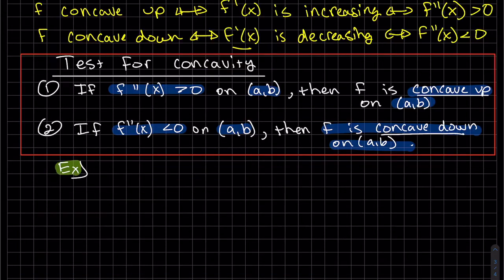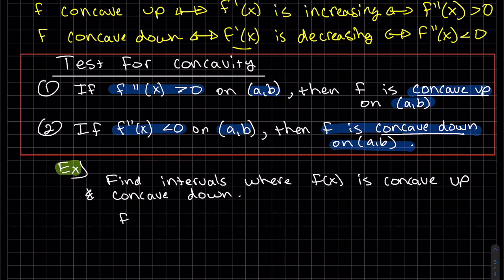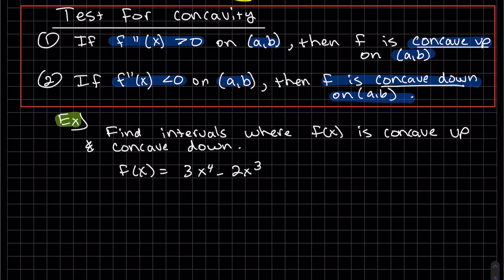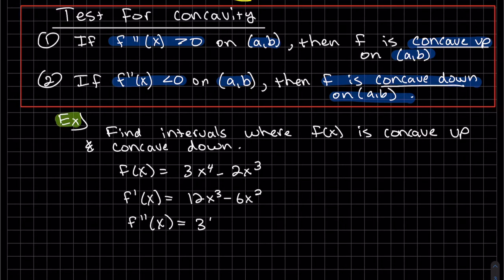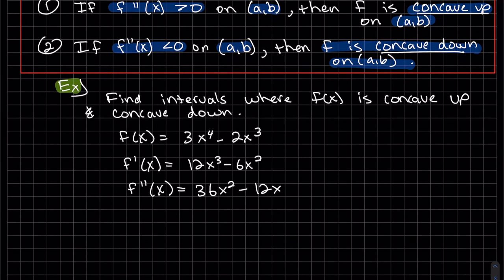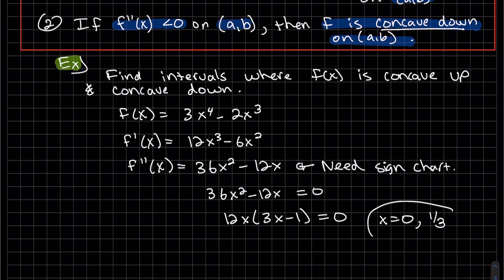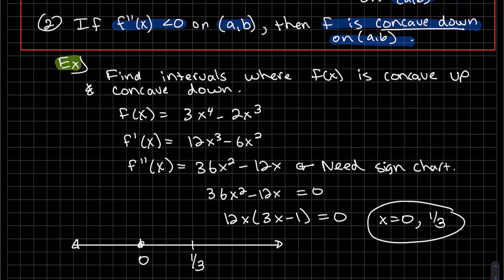Let's do an example. To find concave up and concave down, we have to find the second derivative, and then we need a sign chart on it. Set this equal to zero, and our zeros are x equals 0 and x equals 1/3. It's a quadratic, so it makes sense that we have two zeros. Don't forget to label your sign chart which function it is every single time.